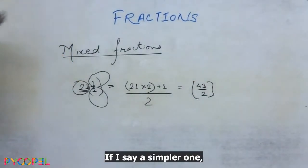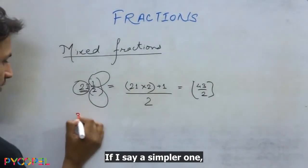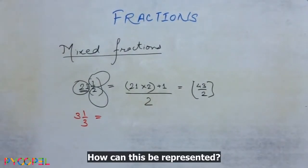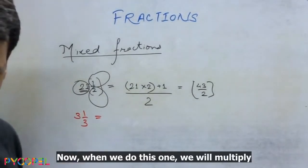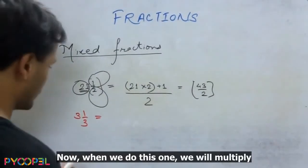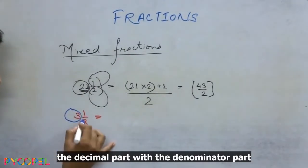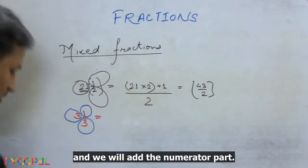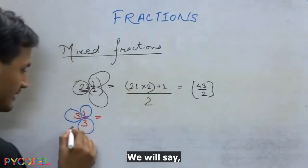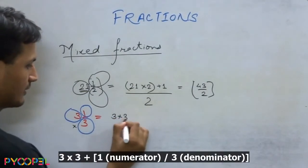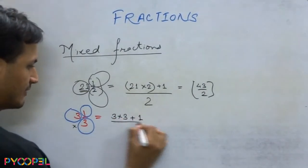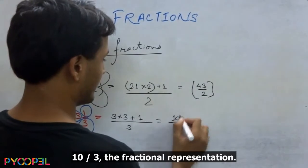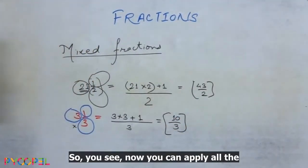Again, let's take another one. If I say a simpler one, 3 1/3. When 3 1/3 is taken, how can this be represented? Now when we do this one, we will multiply the decimal part with the denominator part and we will add the numerator part. How do we write this? We'll say this into this, which is 3 into 3 plus the numerator divided by the denominator. This comes out to be 9 plus 1, which is 10 by 3, the fractional representation.